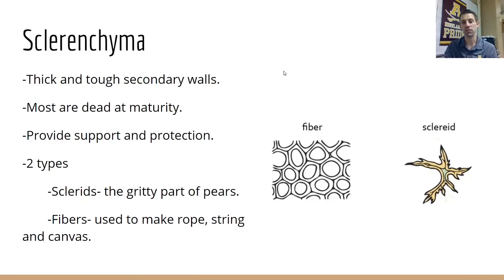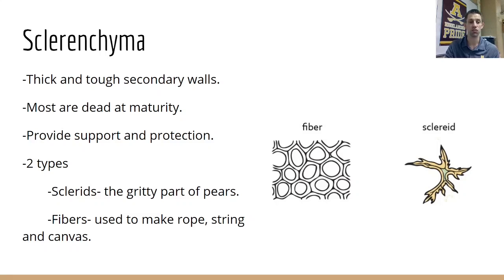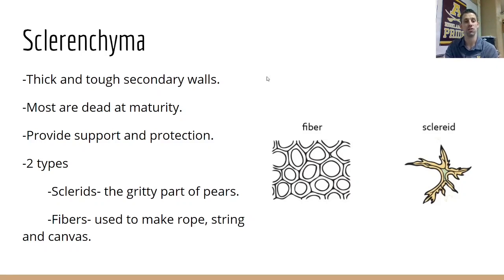Sclerenchyma are much tougher, thicker, stronger cells, and there are two major types: fibers and sclerids. Sclerids are what you notice if you've ever eaten a pear and noticed the gritty texture inside — they can grow quite large under the right types of stress. Fibers are used to make things like string, canvas, and rope. Most of these cells, once they reach maturity, are dead. They lose the nucleus and other structures and are just there to provide structural support and protection.